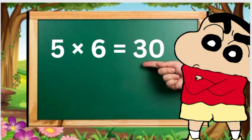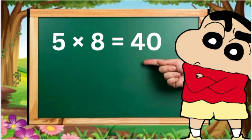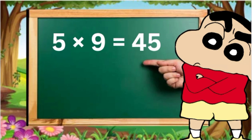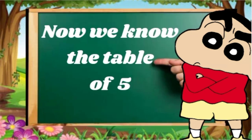5 7s are 35, 5 8s are 40, 5 9s are 45, 5 10s are 50. Now we know the table of 5.